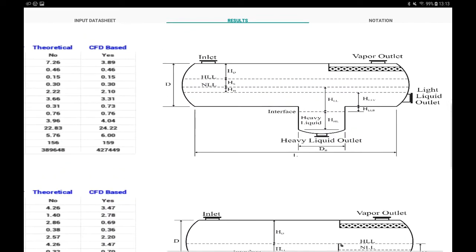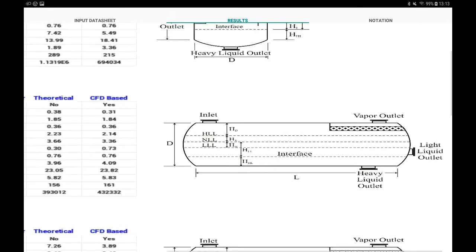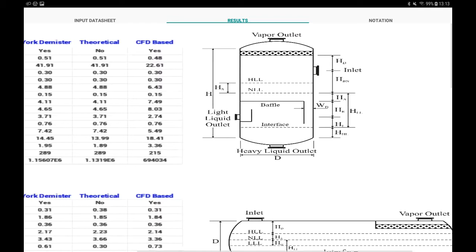Both vertical and horizontal orientations and various horizontal design types, that is simple design, boot, weir, and bucket in weir, are covered.